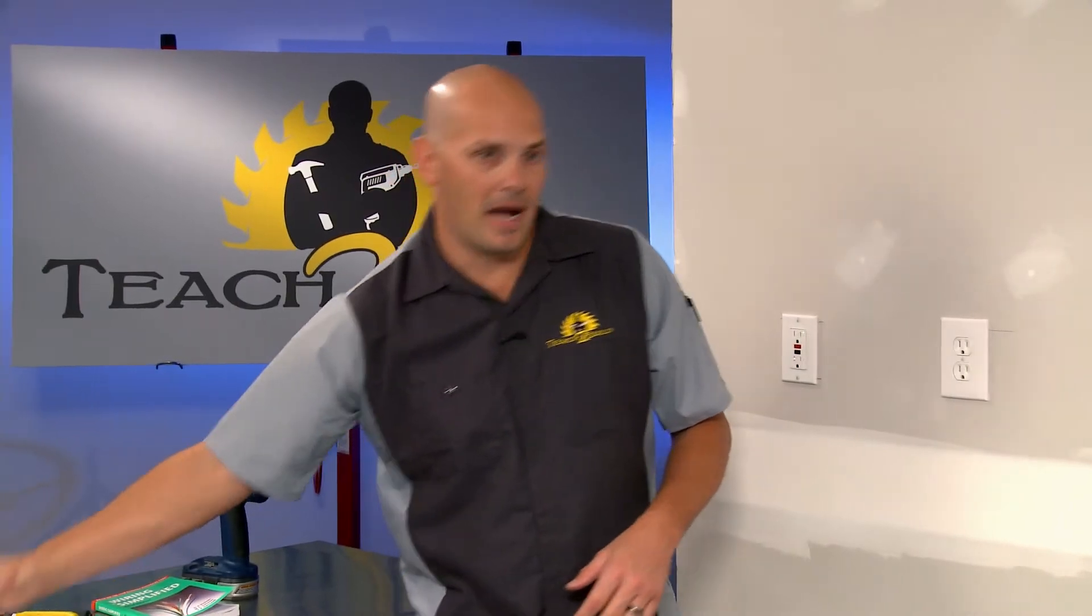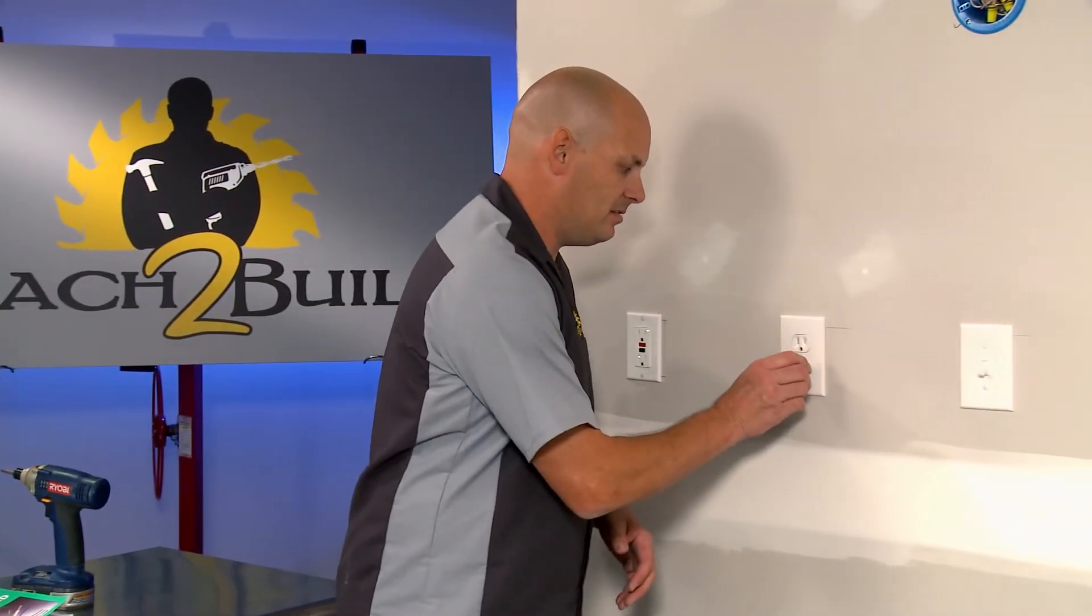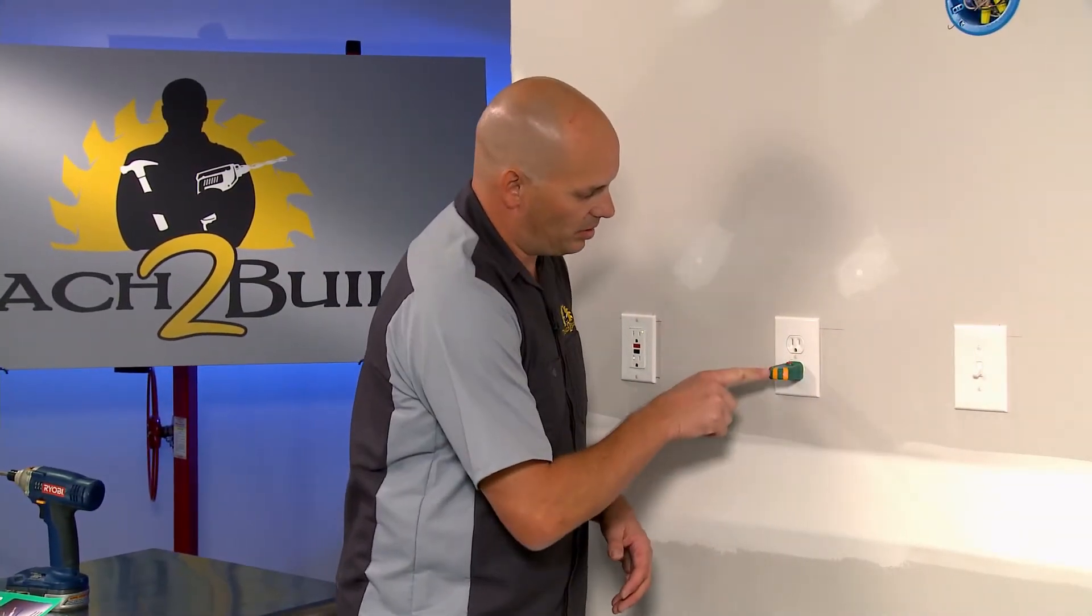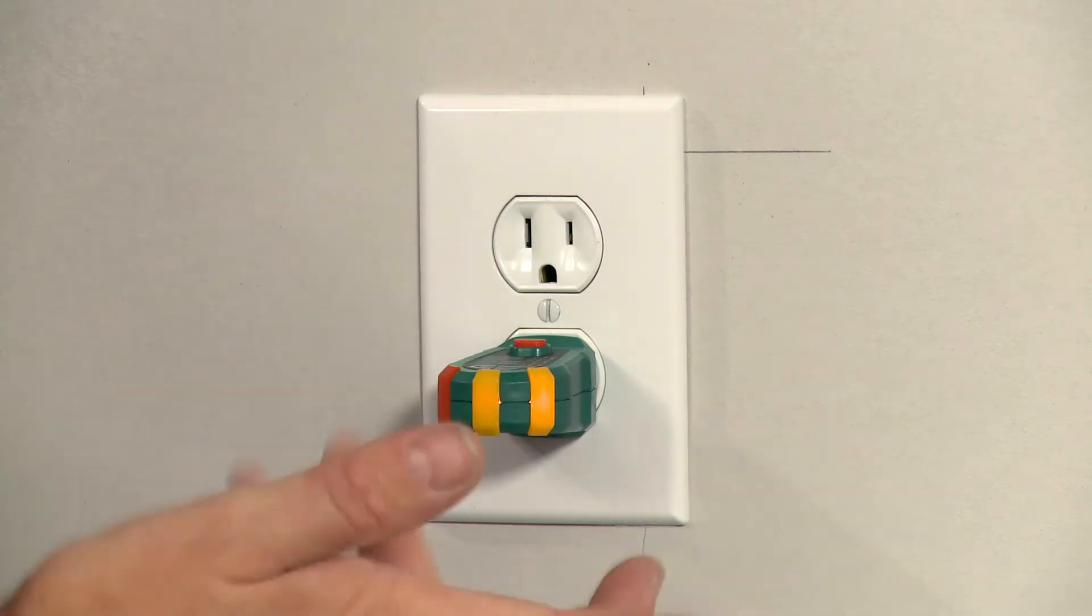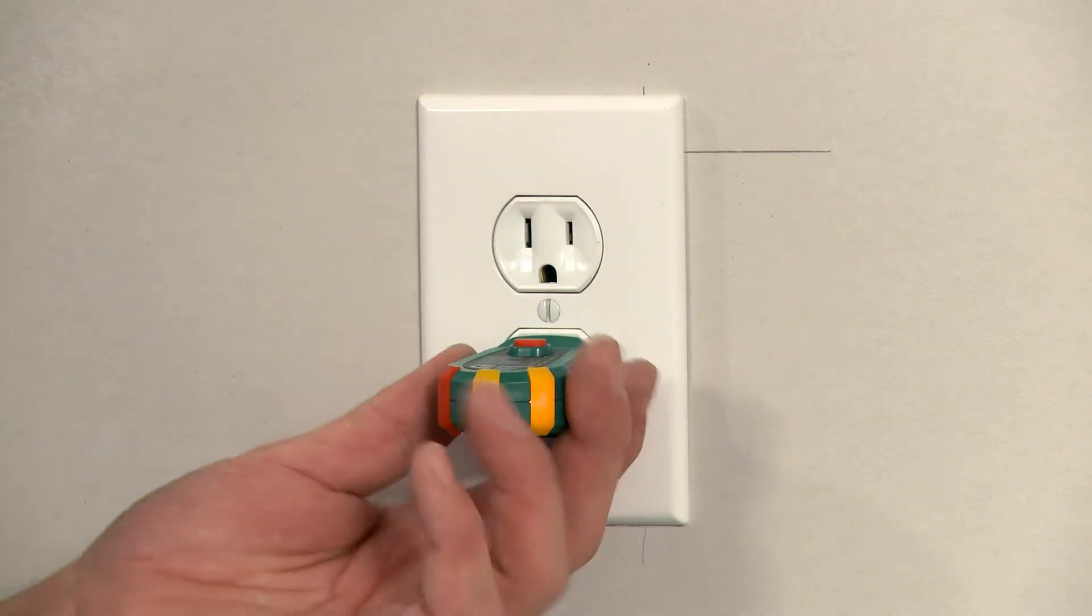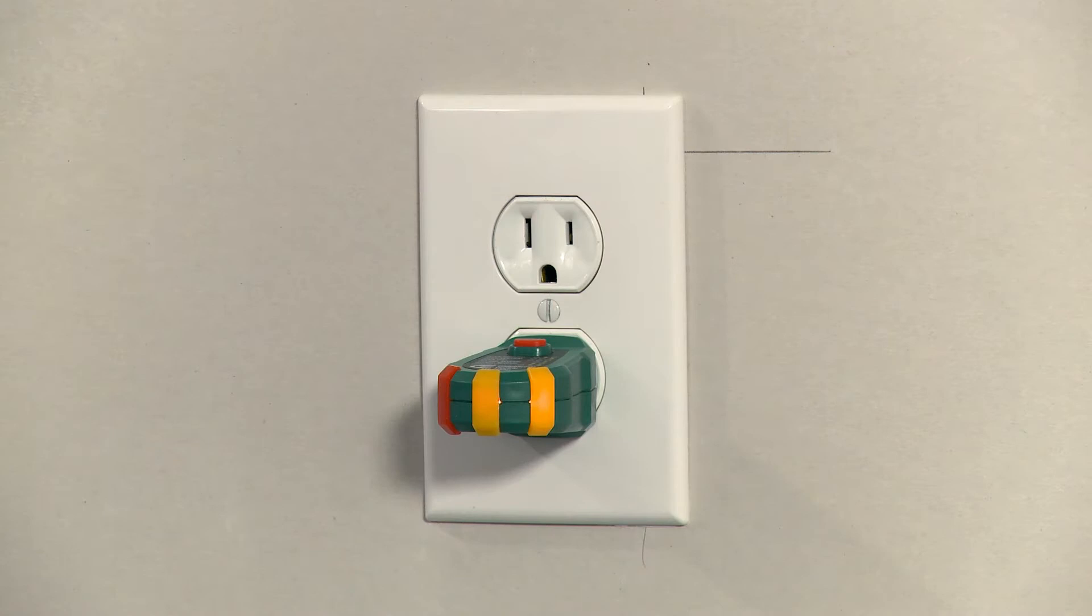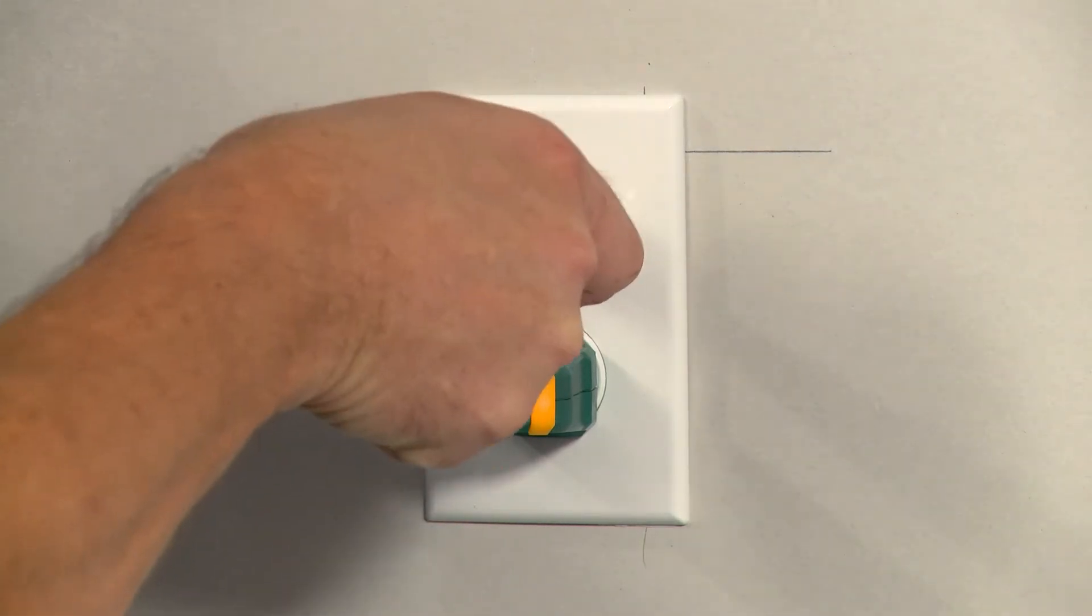We're going to start by making sure the power is disconnected. This little device here will not only tell us if it's wired properly, but it will also tell us we can verify the power is off later. Or we can use a volt tick like this to double check it. Right now the power is on. That should not beep when it's off.